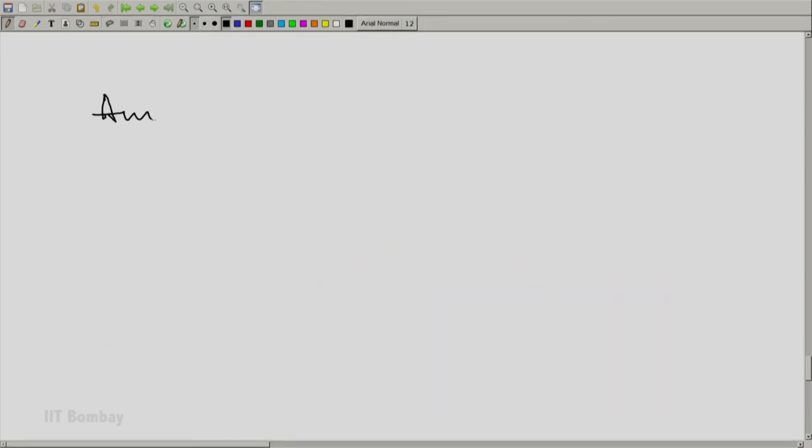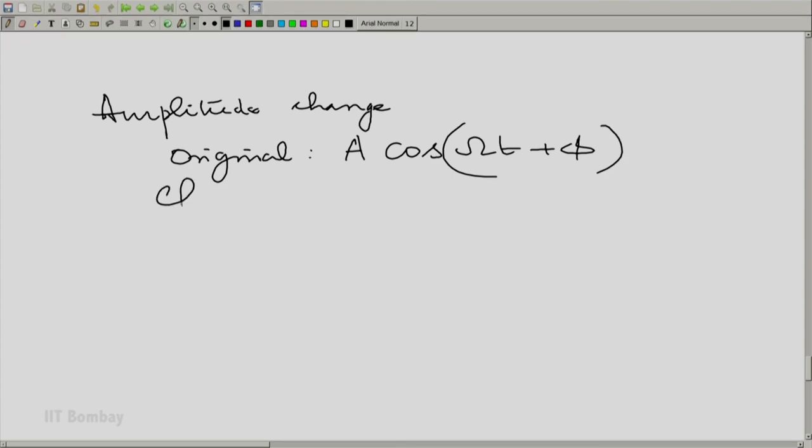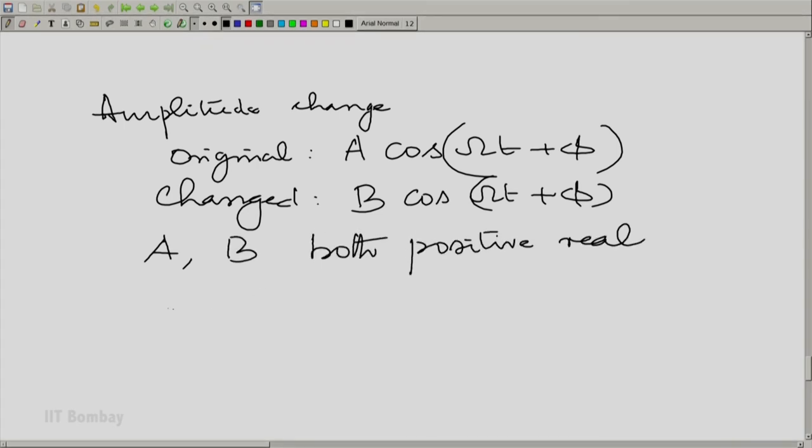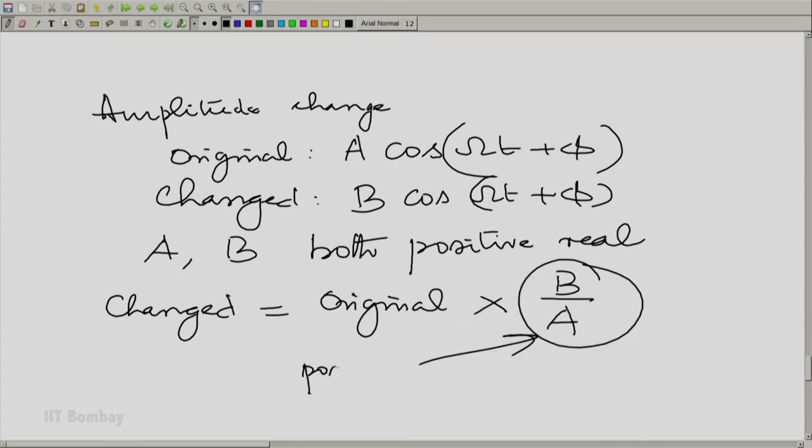Now a change of amplitude in a sine wave is easy to understand. Suppose you had the original sinusoid to be A cos(Ωt + φ) and the changed sinusoid to be B cos(Ωt + φ), and needless to say, A and B are both positive real numbers. Then the changed sinusoid is equal to the original sinusoid multiplied by B/A, which is also a positive real number. So it is very simple. The change of amplitude in a sinusoid is beautifully and simply described by just a multiplying constant.